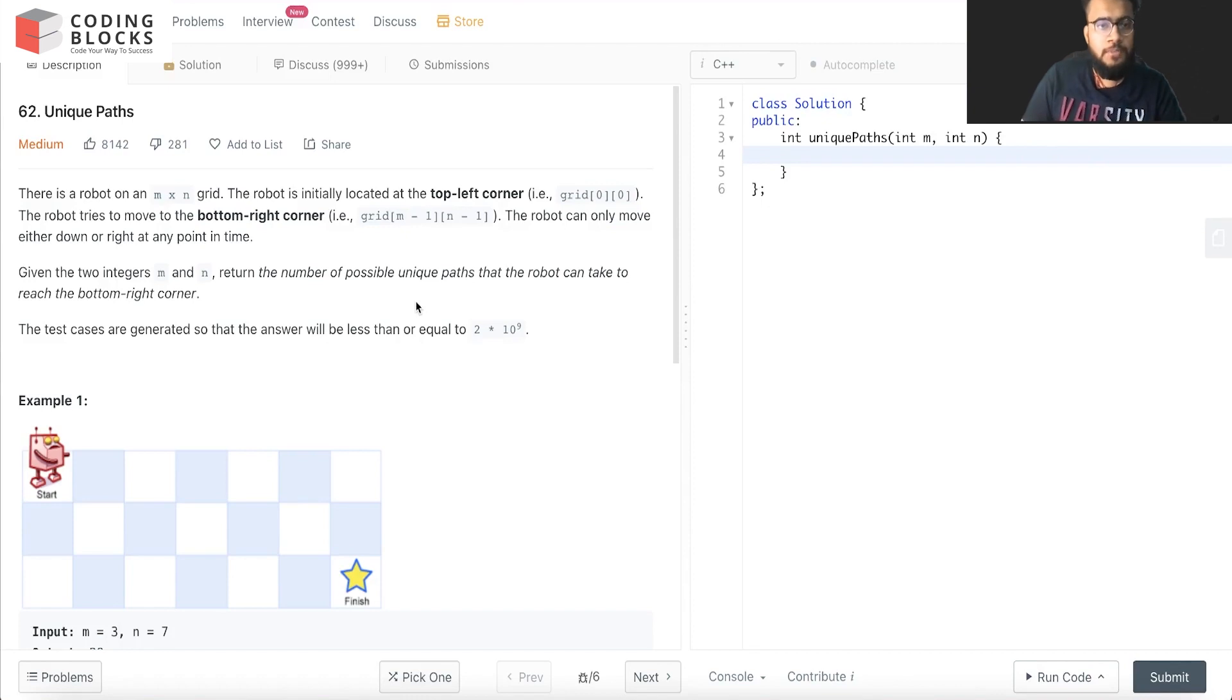We'll look at this problem from LeetCode top interview questions: Unique Paths. It is basically a DP problem, but it can also be solved using maths. Today we'll look at the recursion and how we can optimize the recursion by using memoization. Let's look at the problem statement. It says there is a robot on a matrix that is initially on the top left corner at the (0,0) index.